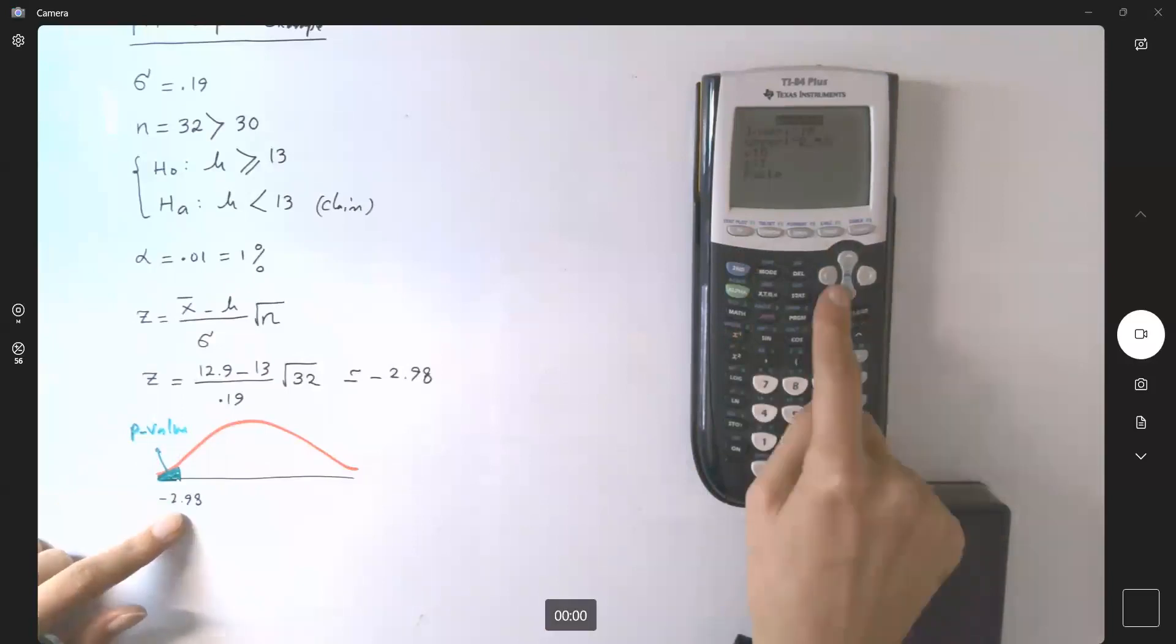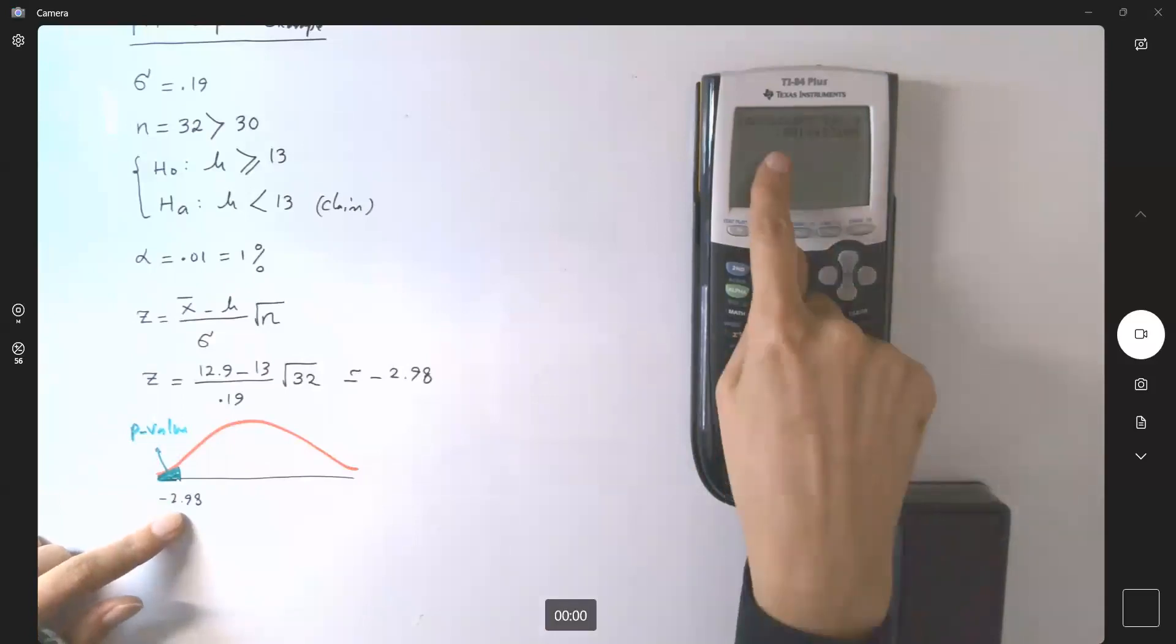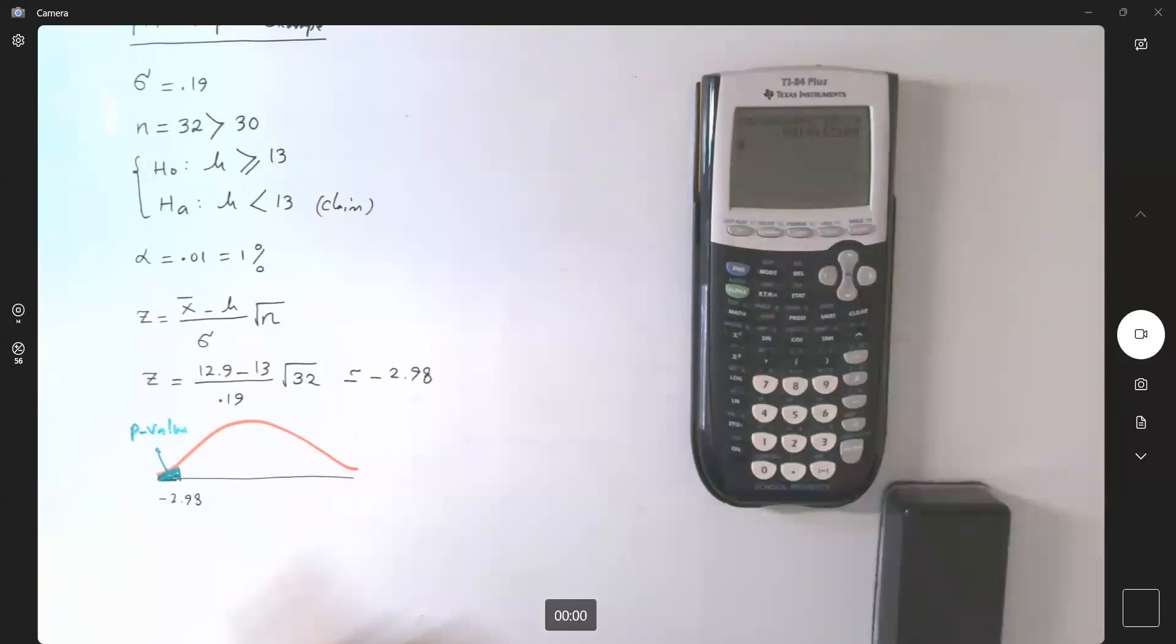The mean is 0, standard deviation is 1. In the computation, p-value is 0.0014. So p-value is 0.0014.